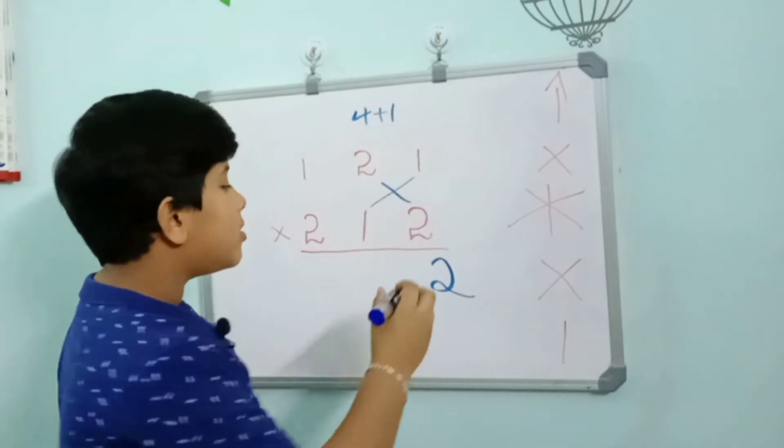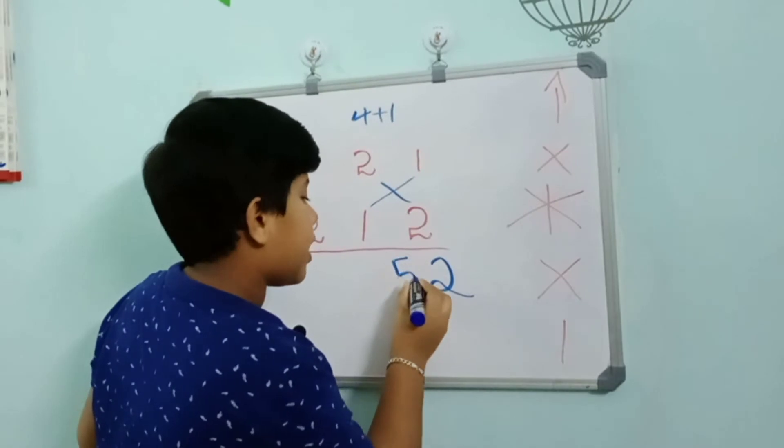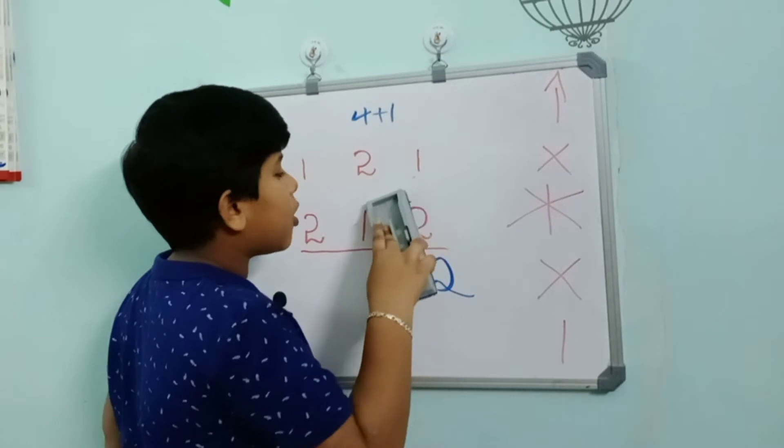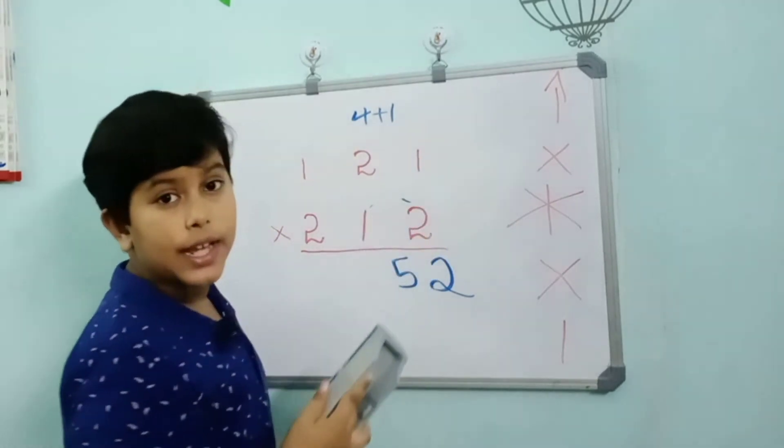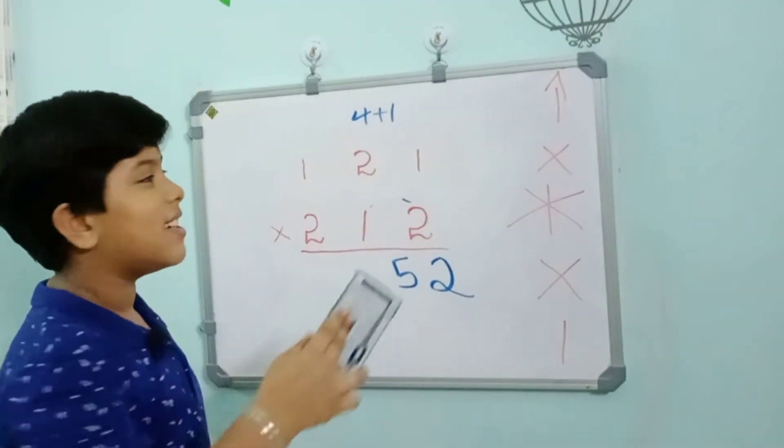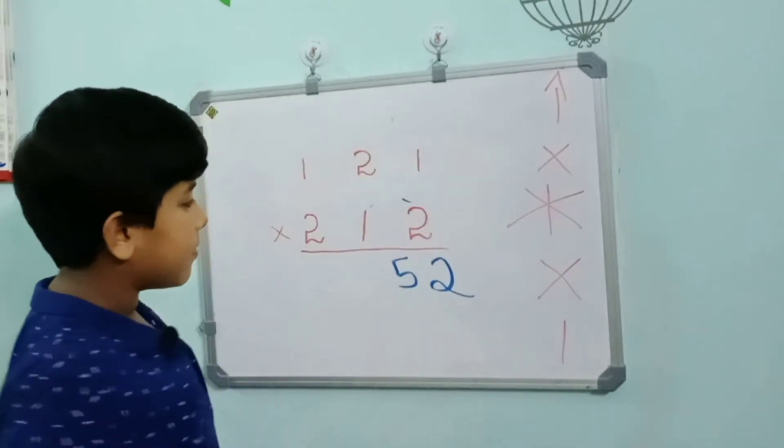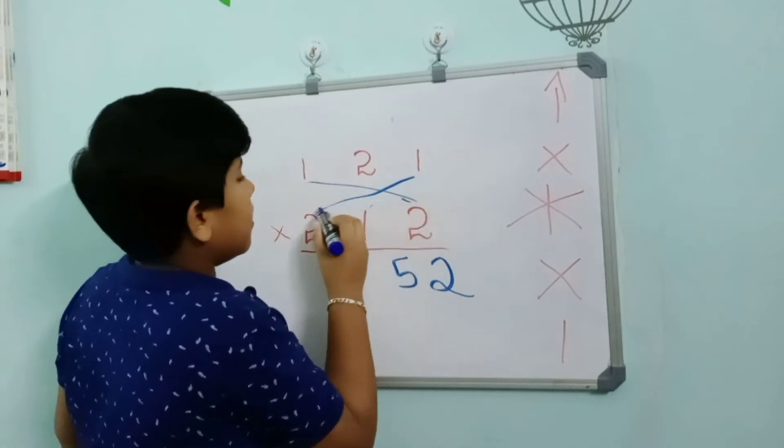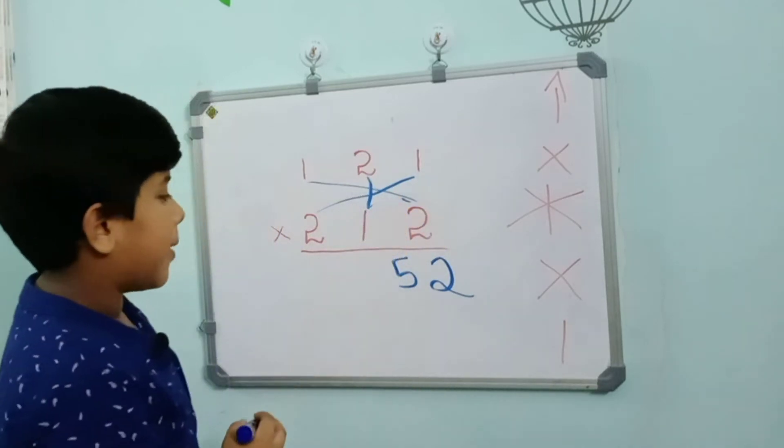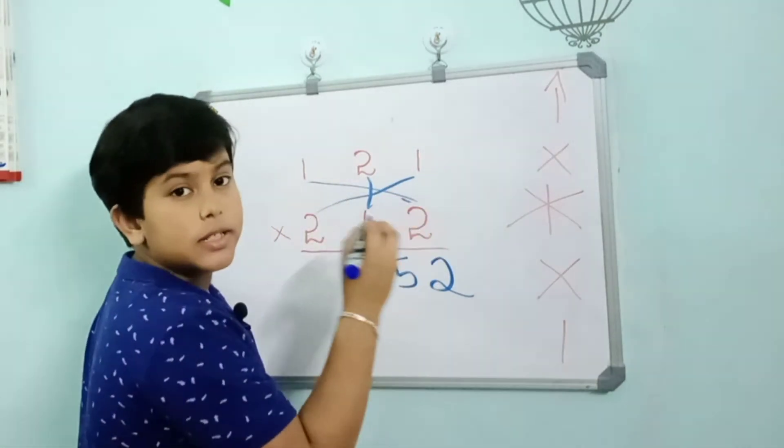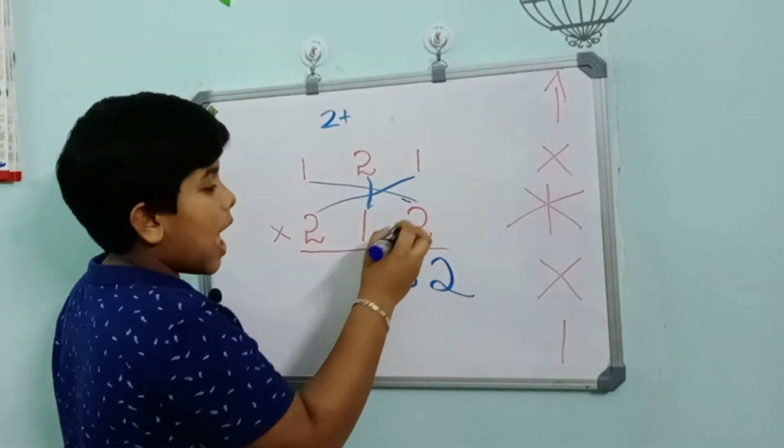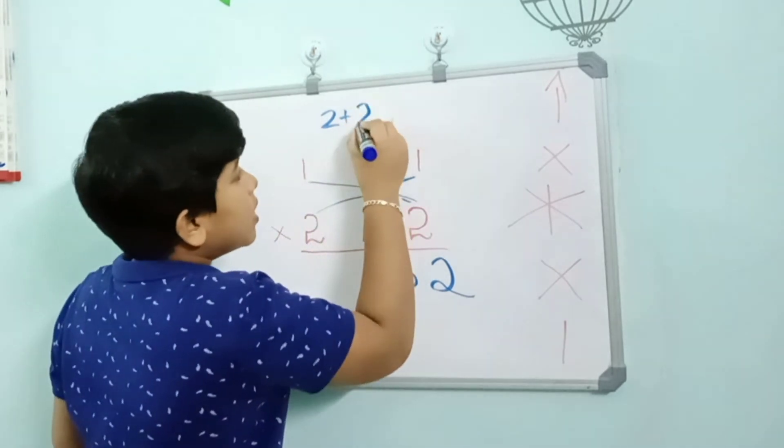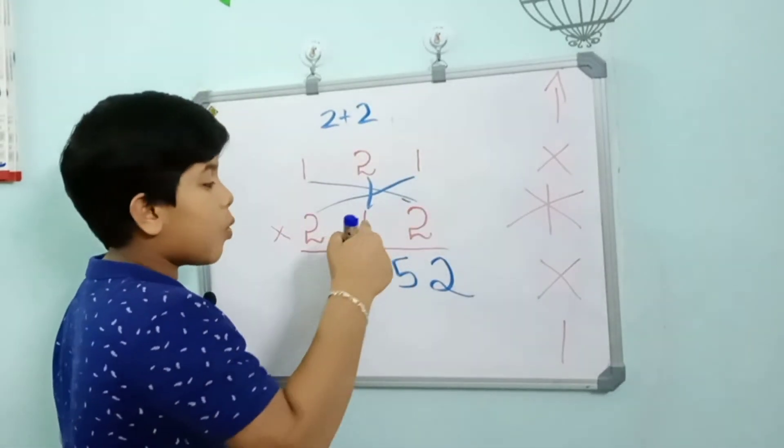The next pattern is a bit complicated but if you study it will be very easy. 2 into 1 equals 2, plus 2 into 1 equals 2, then 1 into 2 equals 2. So 2 plus 2 plus 2 equals 6.